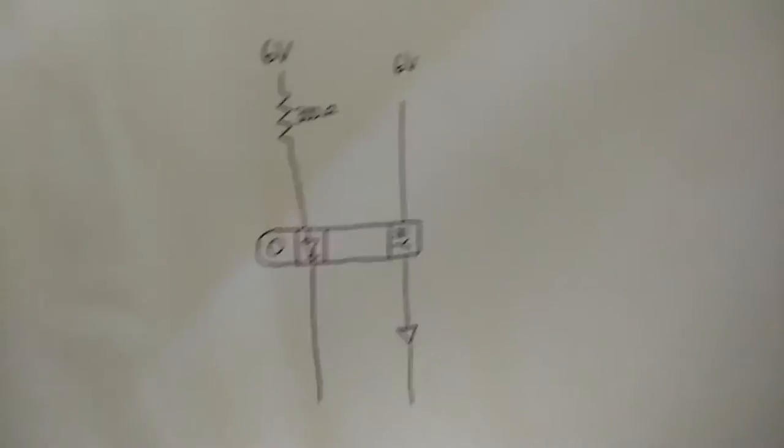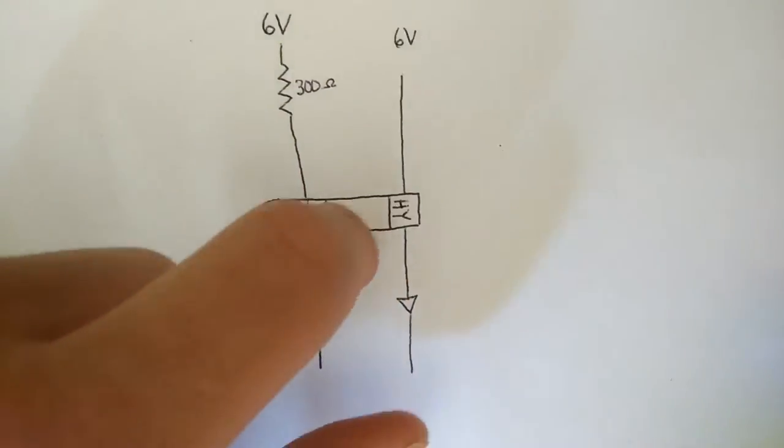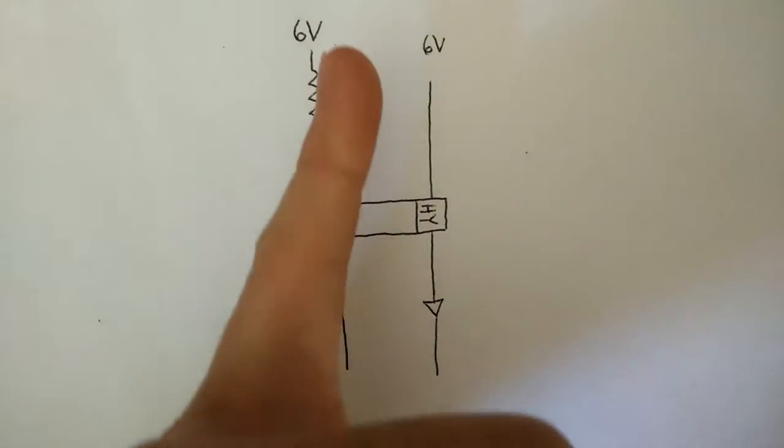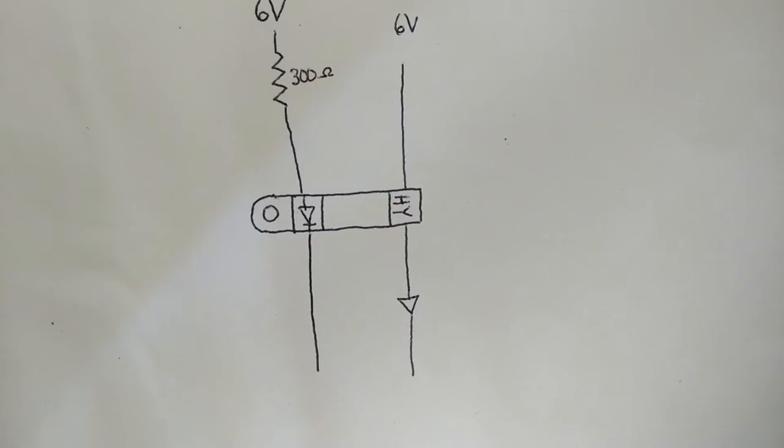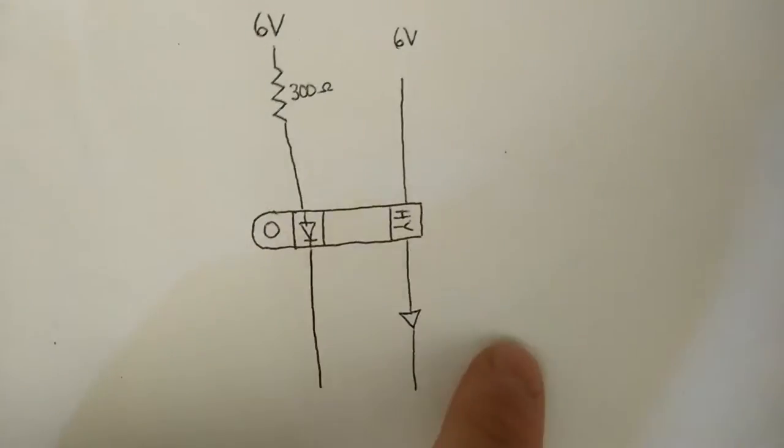On the right side, this is the side which will only work when there's no interruption. So for this side I just have six volts and I got an LED to light up. Okay, so I'm going to show you how it works.